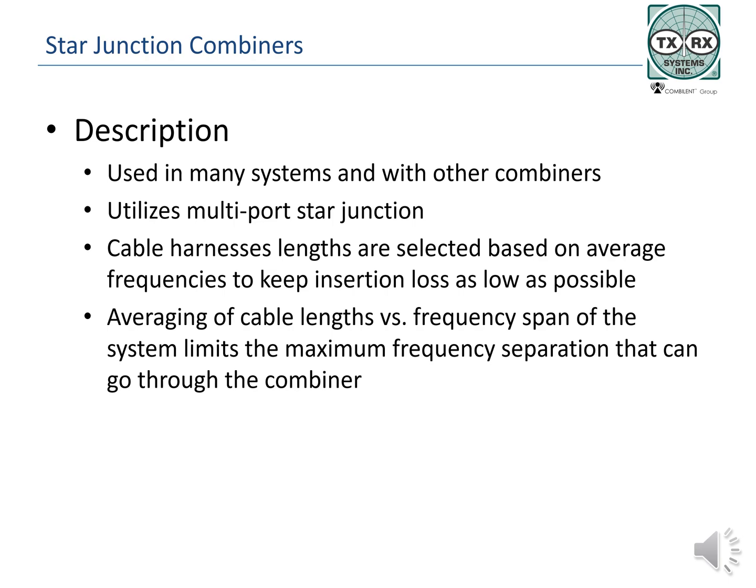Each of the input connectors is arranged on a T connection inside the star junction body, with multiple T's then summed to the output connector. The number of junctions or ports varies. The junction must be rated for higher power and exhibit constant impedance. The cables from the output of each transmitter are averaged or of a compromised length and act as a matching network allowing signals of proper frequencies to pass. Averaging cable lengths versus frequency does result in one practical limitation for the star junction combiner: the frequency range of those channels going through the combiner will be limited to how much impedance mismatch can be tolerated due to the averaging process.